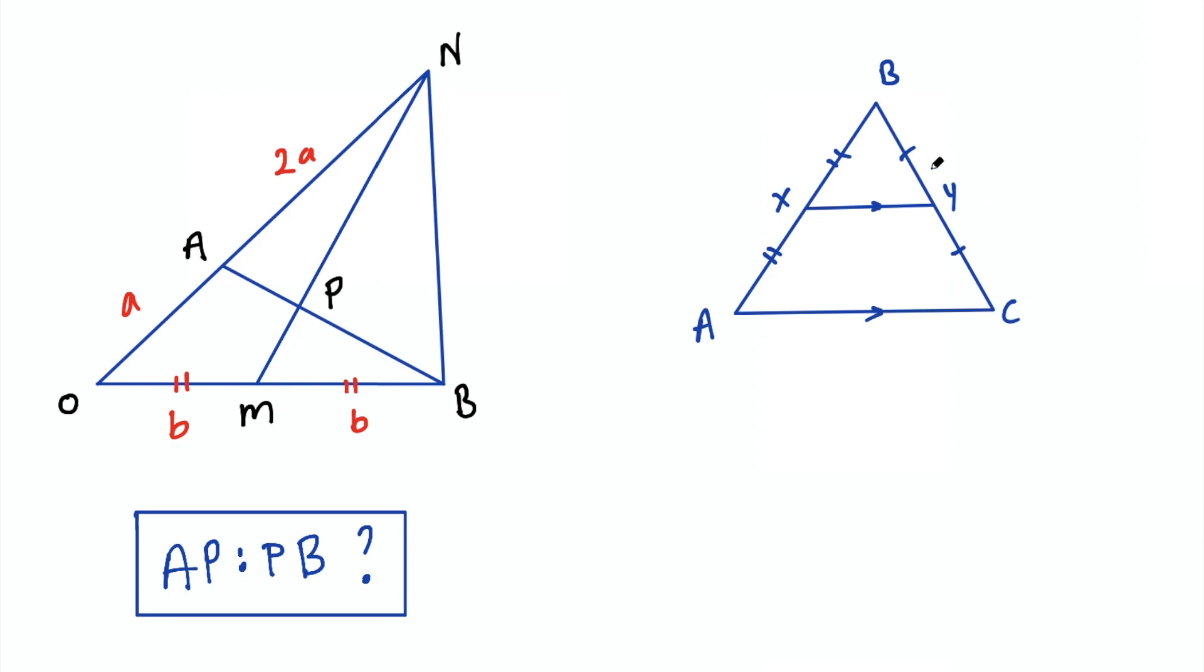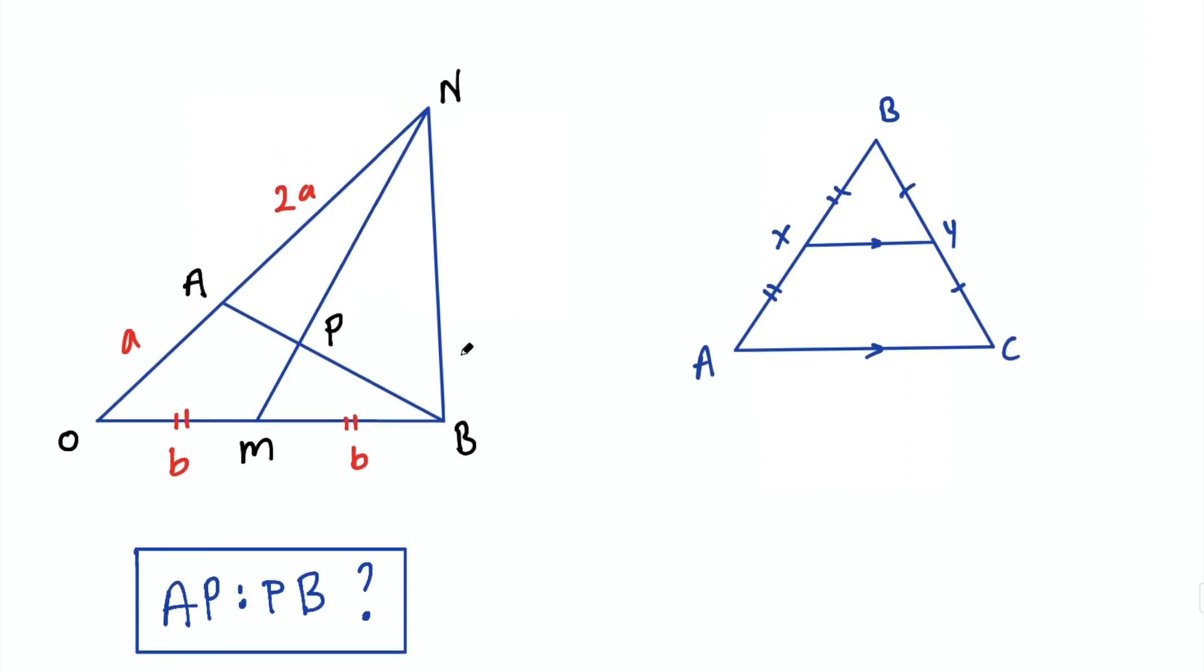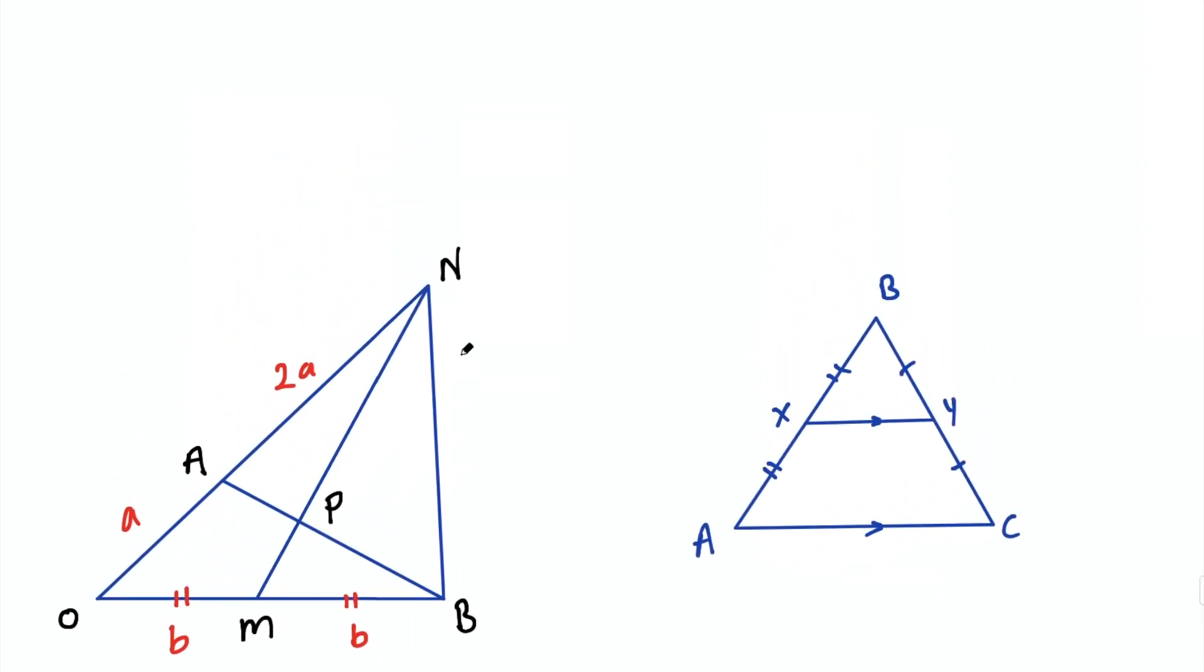Okay, so we're going to use that fact in this problem to solve it really quickly. So firstly we're going to draw a line parallel to MN, so we're going to draw a line from B that is parallel to MN and this line just goes on forever.